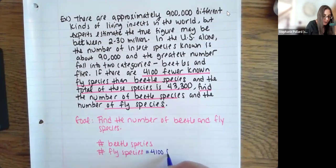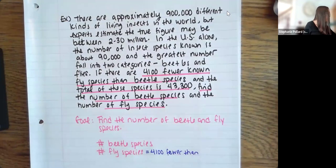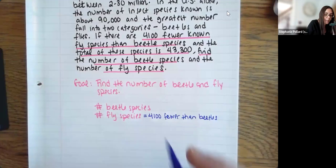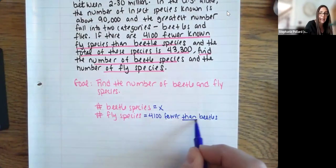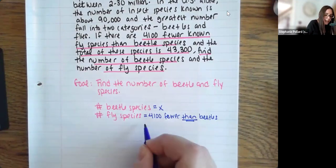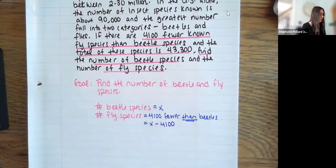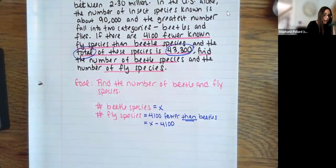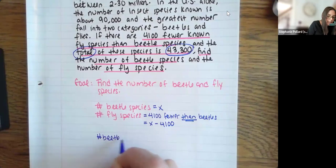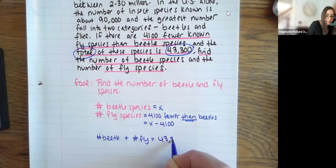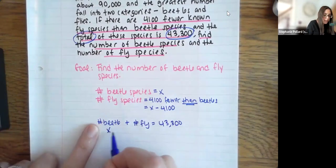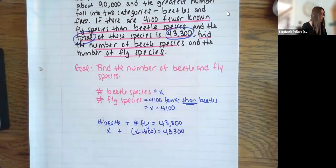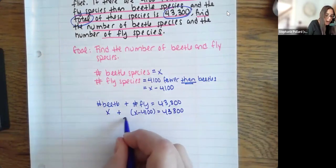There are 4,100 fewer fly species than the beetles. I don't really know anything about the beetle species, so I'm going to let that be my x. I have to be careful here — the word 'than' is going to reverse the order, so I'm going to write flies as x minus 4,100, not 4,100 minus x. The other big thing I know is that when I add these two together, I get 43,300. So: x plus (x minus 4,100) equals 43,300. I don't really need the parentheses, but it shows the two different groups I'm adding together. Combining terms, I end up with 2x minus 4,100.